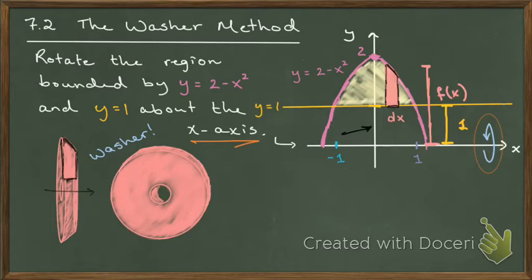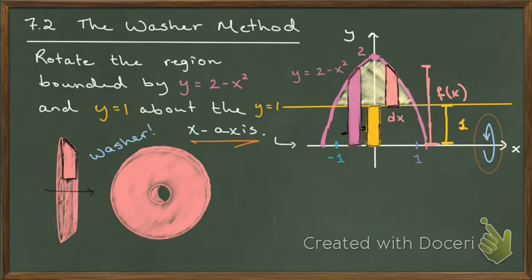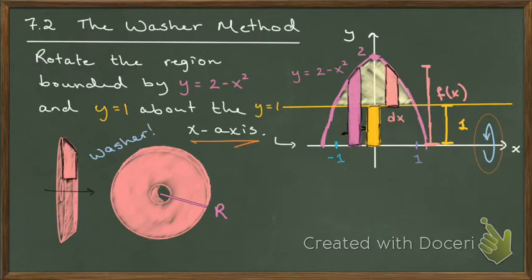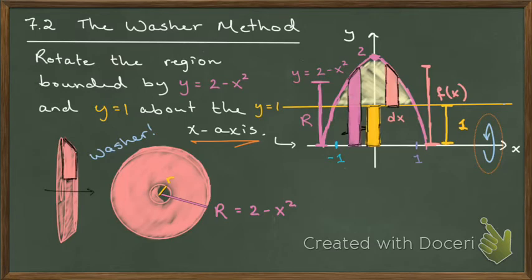What we tend to do in situations like this is think about this like two disks instead. I think of the top function as the larger disk — if I draw a slice all the way up to that function and rotate it around, I create a disk with a large radius, capital R. Then rotating the smaller disk, bounded by the line y equals 1 to the axis, gives a smaller radius, little r. Big R is obtained by the height given by the function, so I don't have to subtract the two heights anymore.